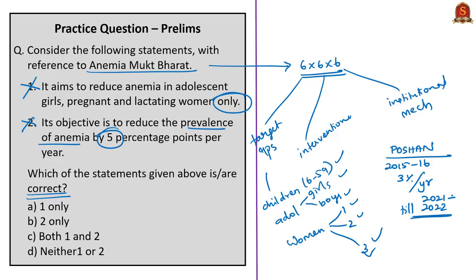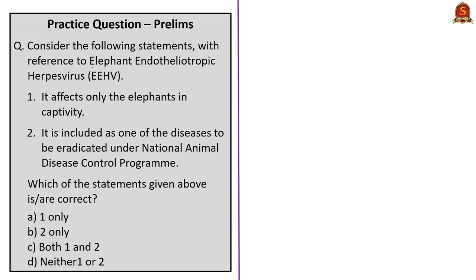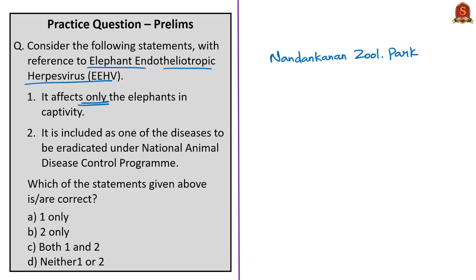The next question is about Elephant Endotheliotropic Herpes Virus. Statement one says it affects only elephants in captivity. This is wrong — during the analysis we saw that this virus can infect even wild elephants. Statement two says it is included as one of the diseases to be eradicated under the National Animal Disease Control Program. That program covers foot and mouth disease and brucellosis — not EEHV.